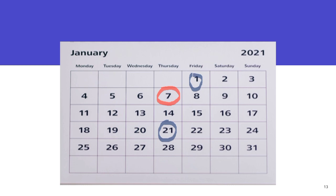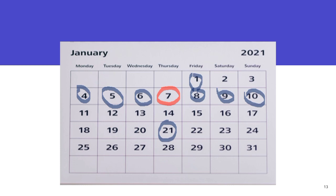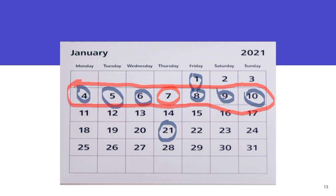So if we count 3 days before that day and also consider 3 days after, the whole of this week represents the fertile period for the woman. If she has unprotected sex during this time, she is actually going to get pregnant.